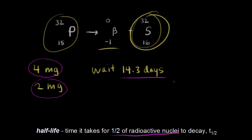So 14.3 days is the half-life of phosphorus-32. And this is the symbol for half-life. So 14.3 days is the half-life for phosphorus-32.